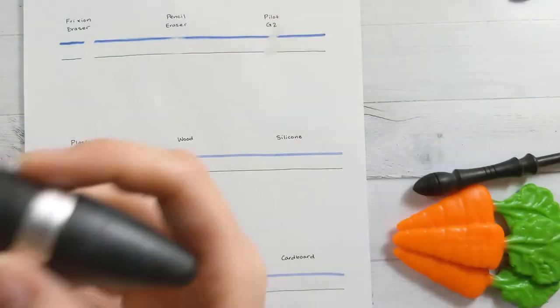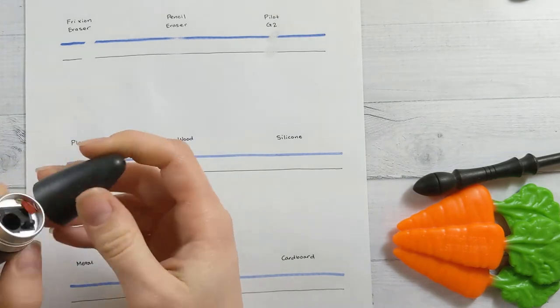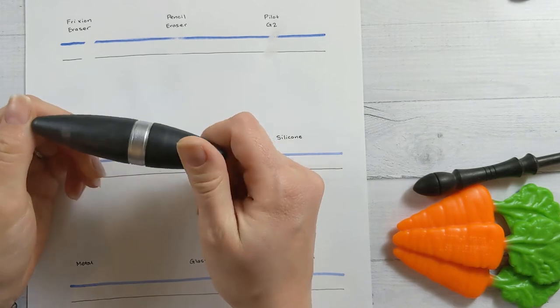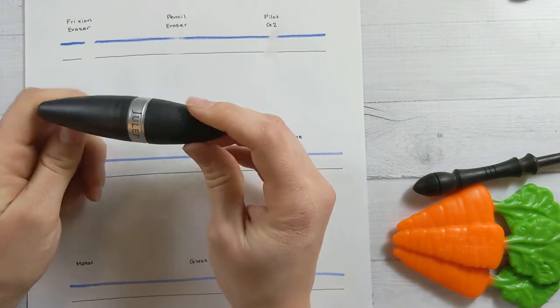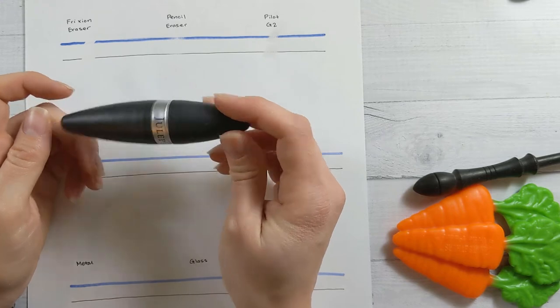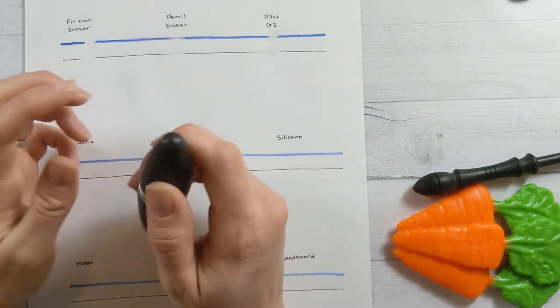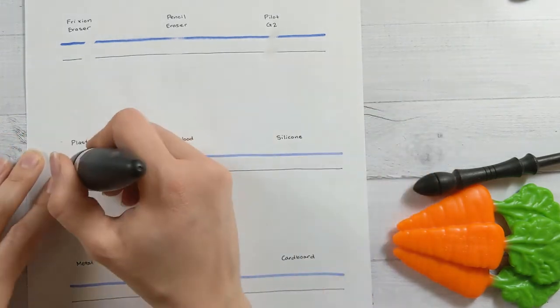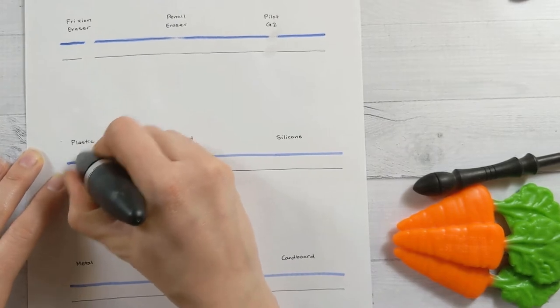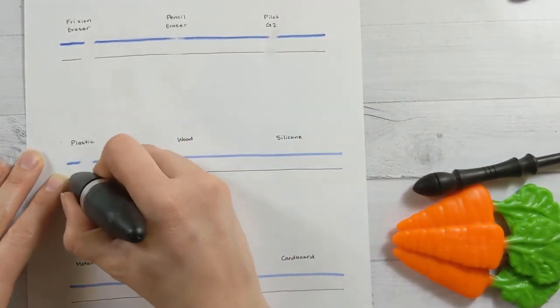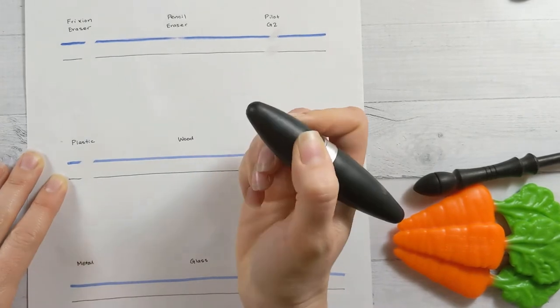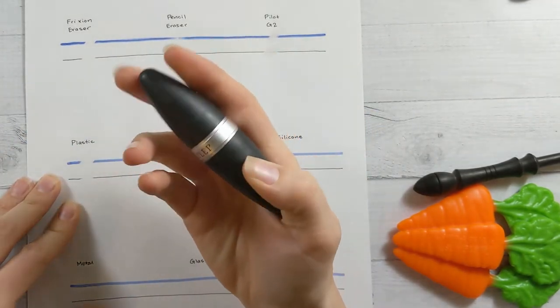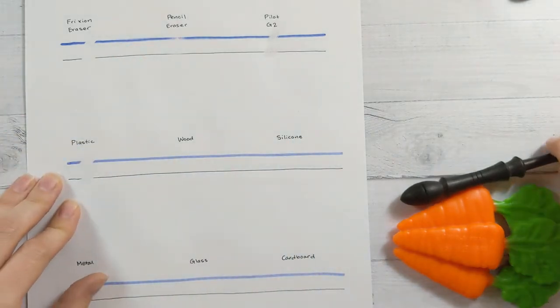Next up, hard plastic. This is an eyeliner pencil sharpener from Julep. It's a rounded hard plastic as well, so I'm going to try this. It's like a matte finish, so I don't know if that changes anything, but it's probably going to be similar to the G2. Oh no, this one works a lot better. I think because it has more surface area touching the paper. That works almost as well as the actual eraser.